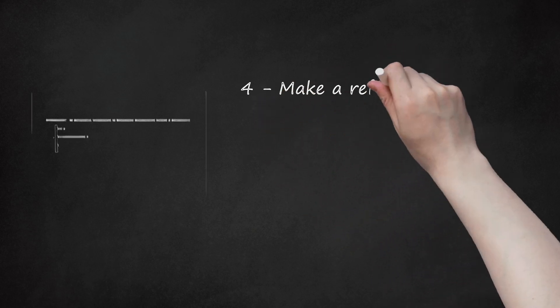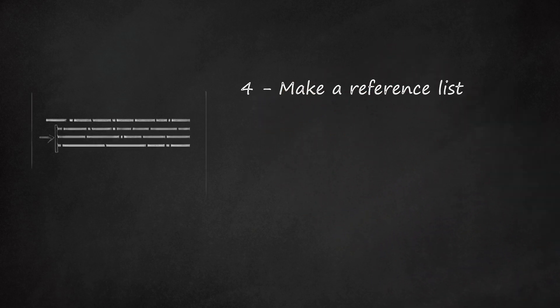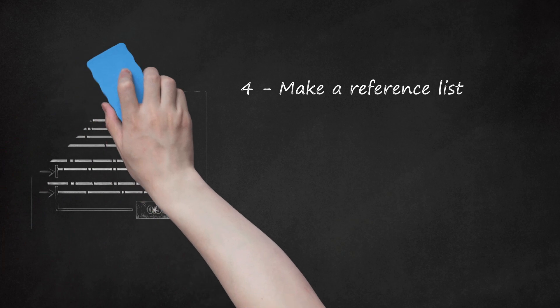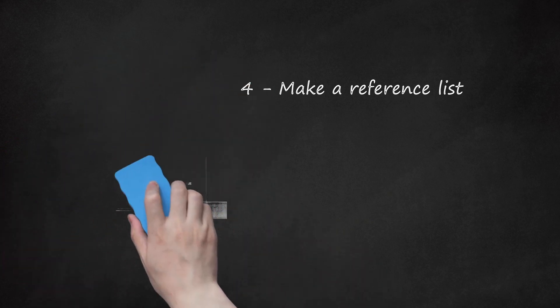Step 4: Make a reference list. This should begin on a separate page at the end of your research paper or essay. Label it "References" in centered text — it should not be bold, italicized, underlined, or in quotation marks — at the top of the page. Double-space the page like the rest of the paper, but do not skip spaces between citations. Do not indent the first line of each citation, but indent all subsequent lines by 0.5 inches from the left.